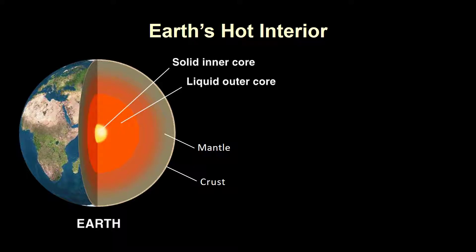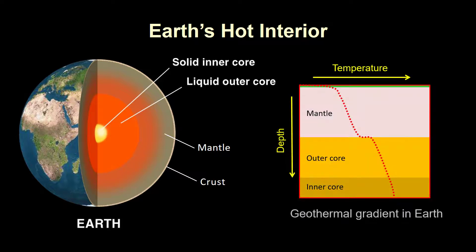You probably know that Earth's interior is very hot. The rate at which temperature increases with depth is represented by the geothermal gradient. Earth's internal temperature increases downward and is estimated to be greater than 6,000 degrees Celsius in the core.